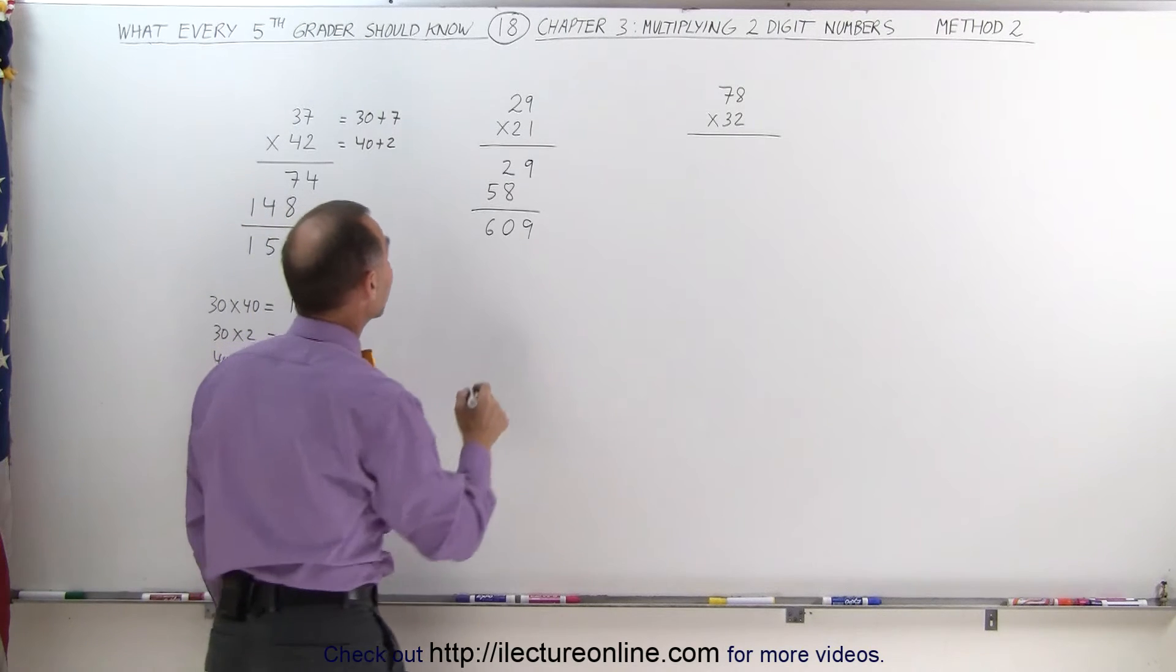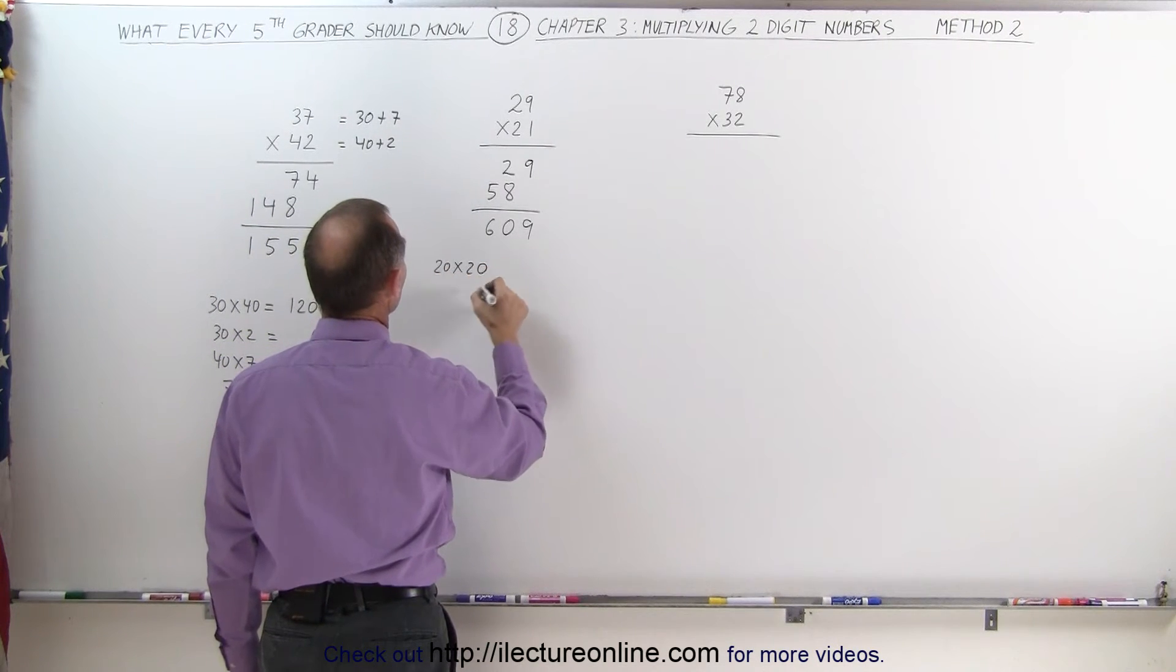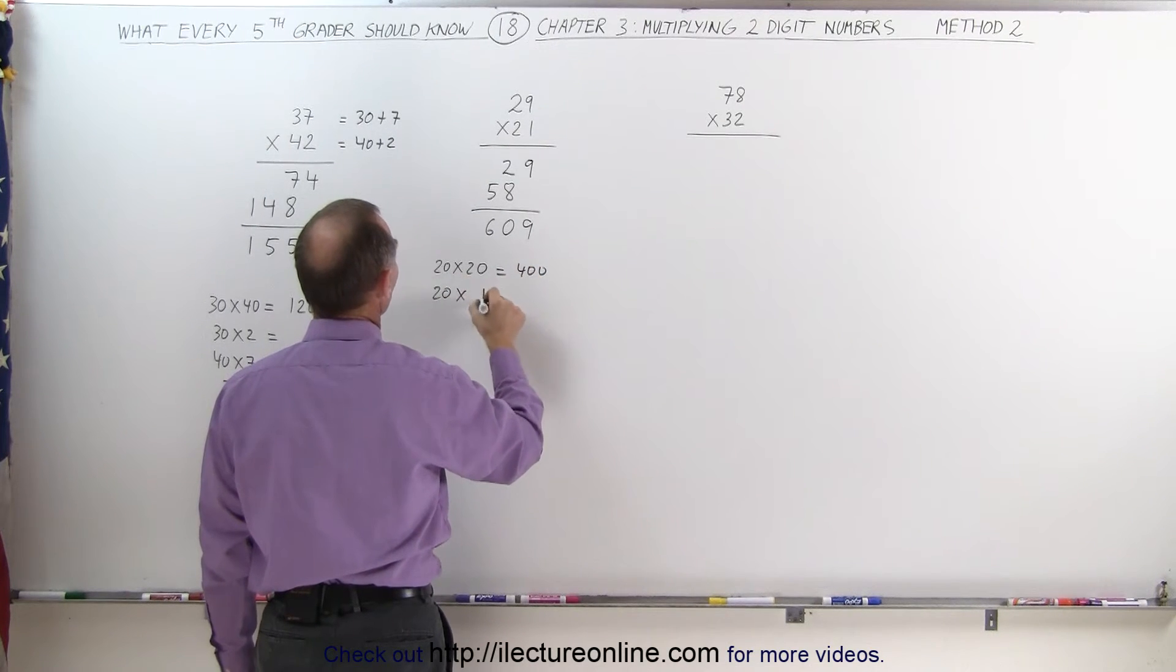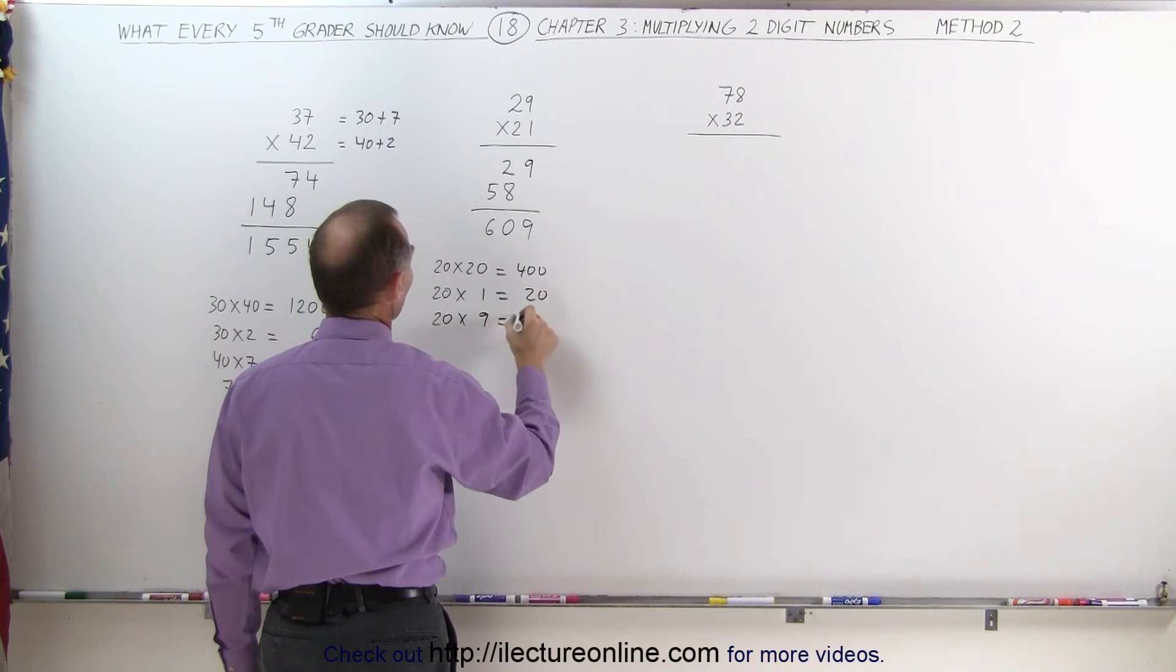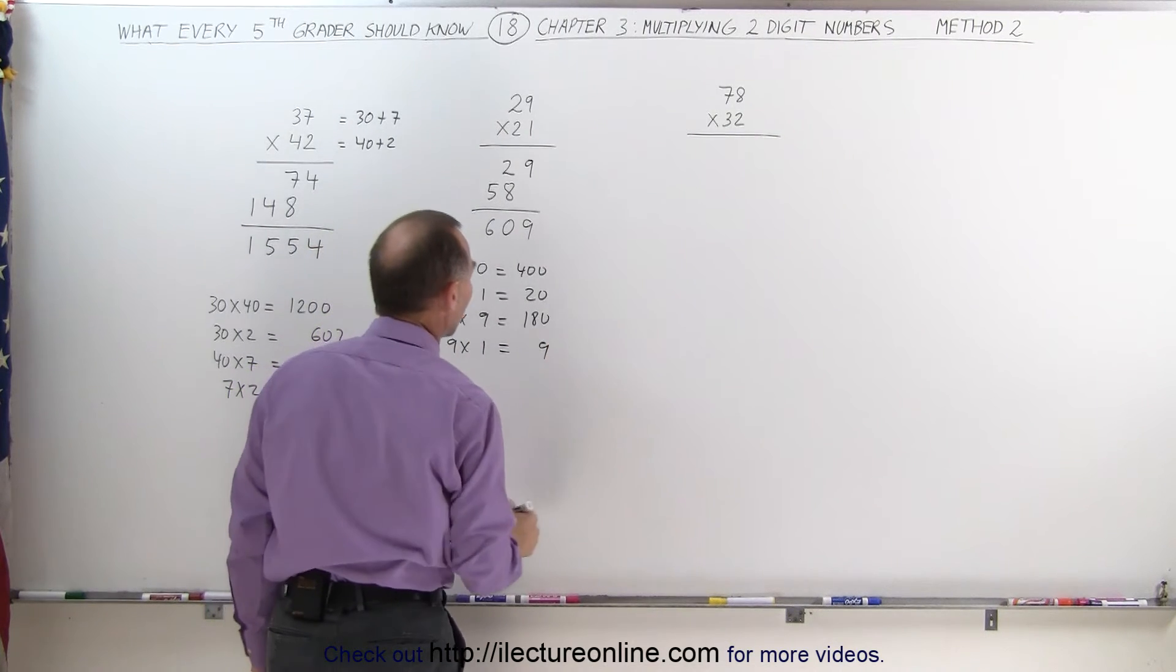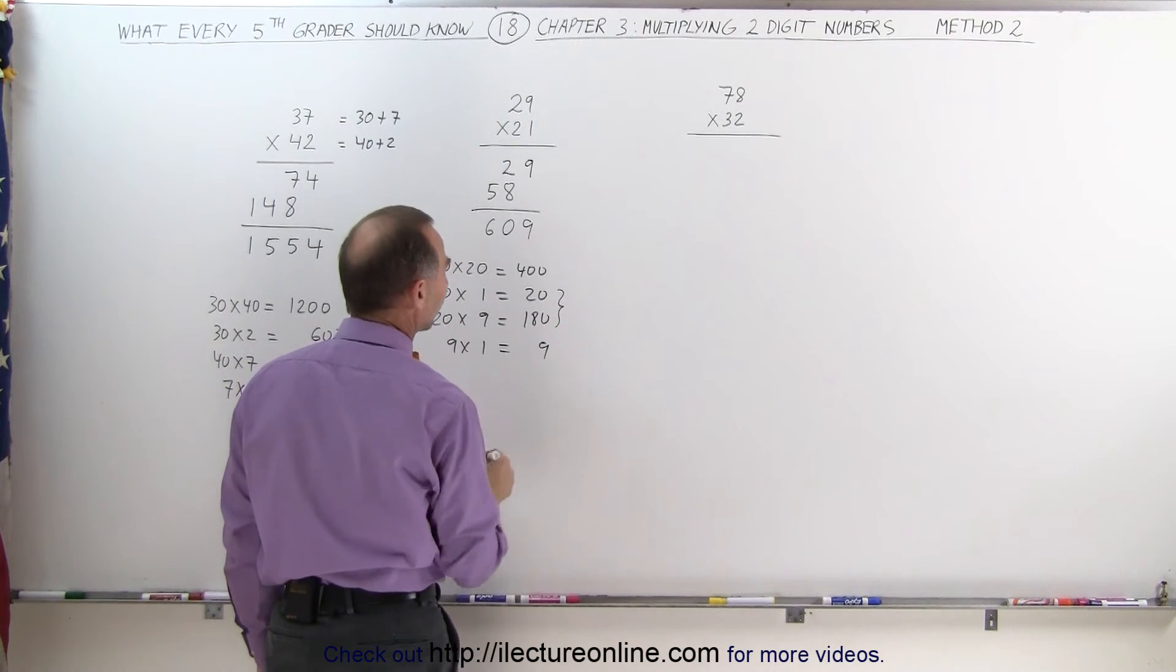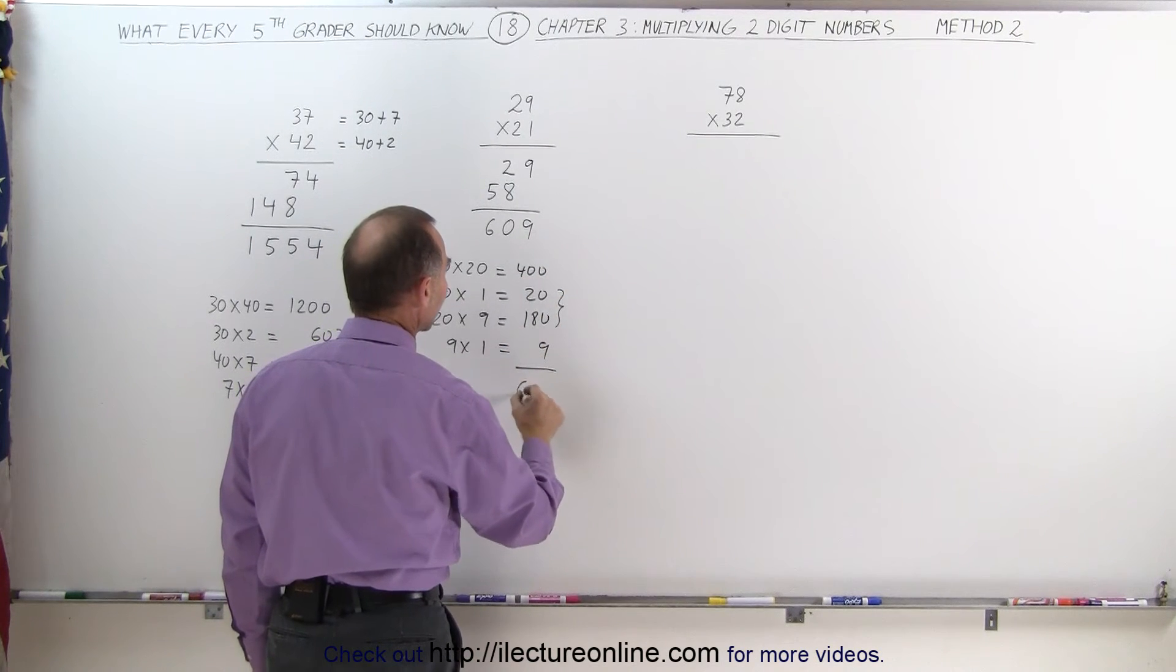But again, we can break it down by saying this is the same as 20 times 20, which would be 400. 20 times 1, which is 20. 20 times 9, which is 180. And finally, 9 times 1, which is 9. Notice when I add these two together first, I get 200. Add to 400, it gives me 600. Plus 9 gives me 609.